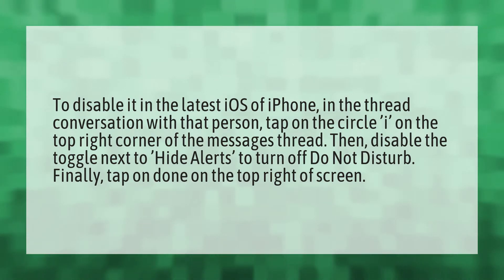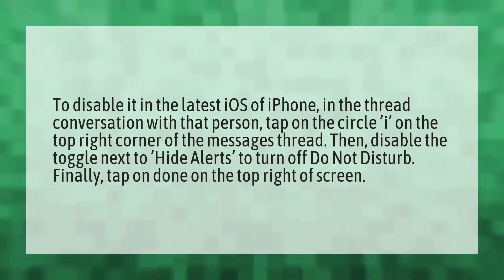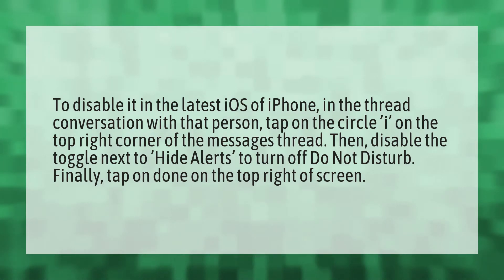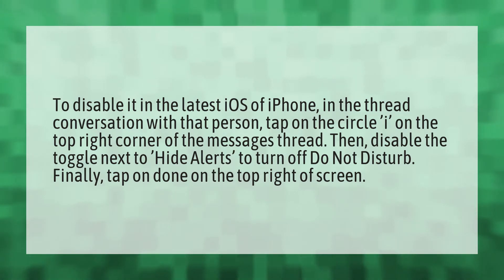To disable it in the latest iOS of iPhone, in the thread conversation with that person, tap on the circle 'i' on the top right corner of the messages thread. Then, disable the toggle next to Hide Alerts to turn off Do Not Disturb. Finally, tap on Done on the top right of the screen.